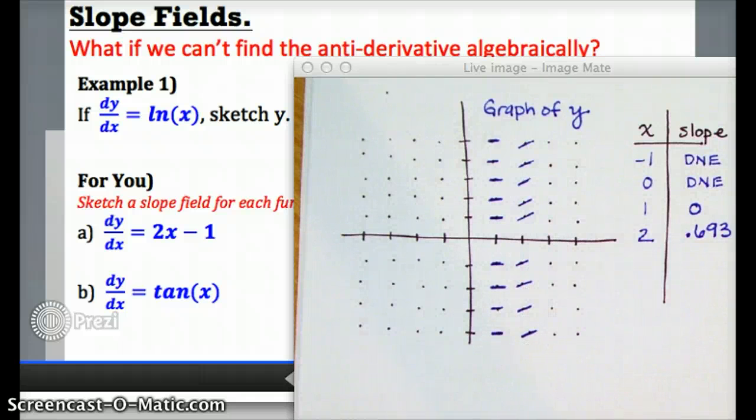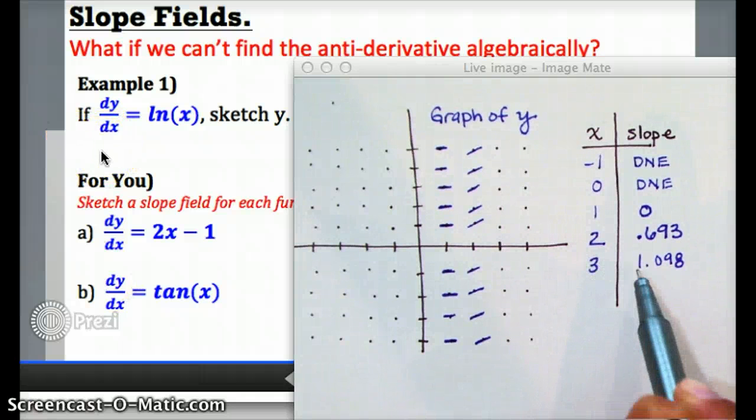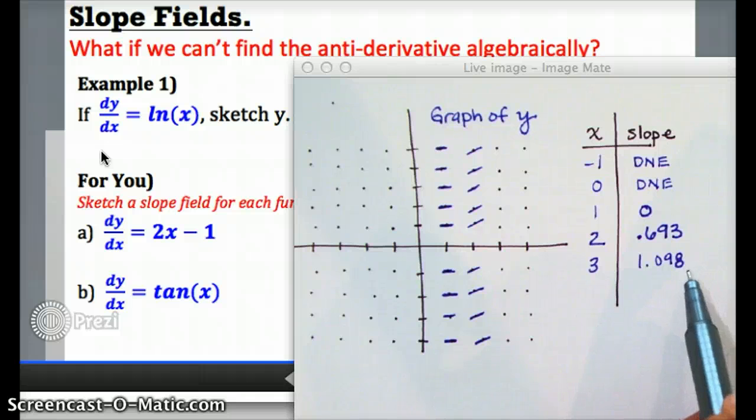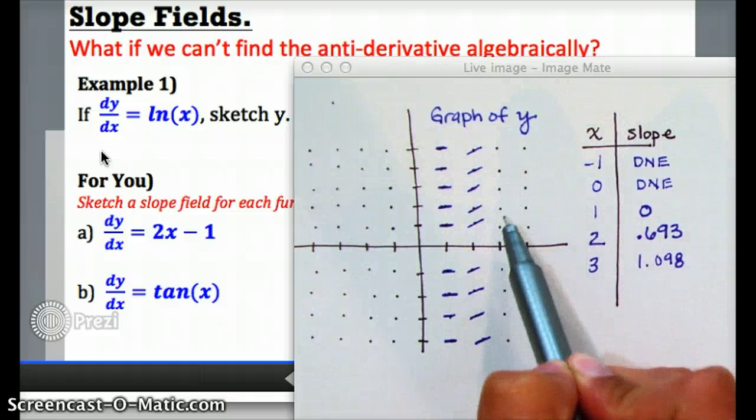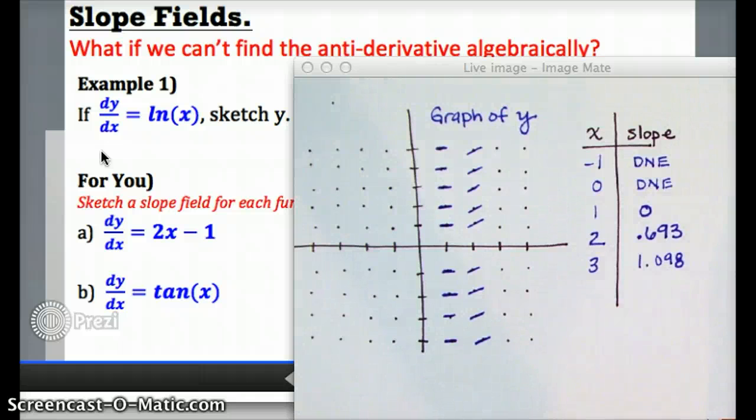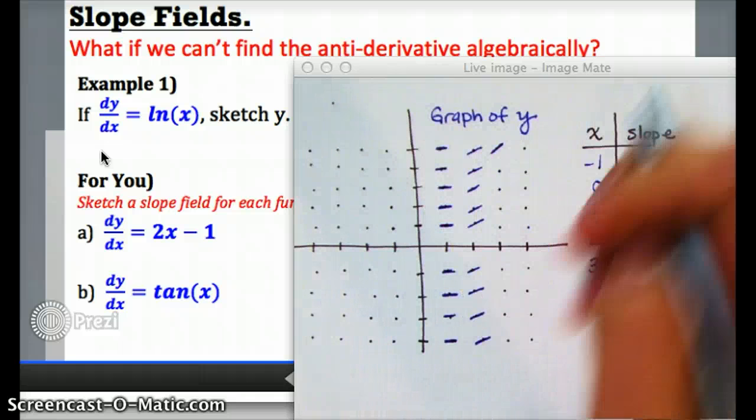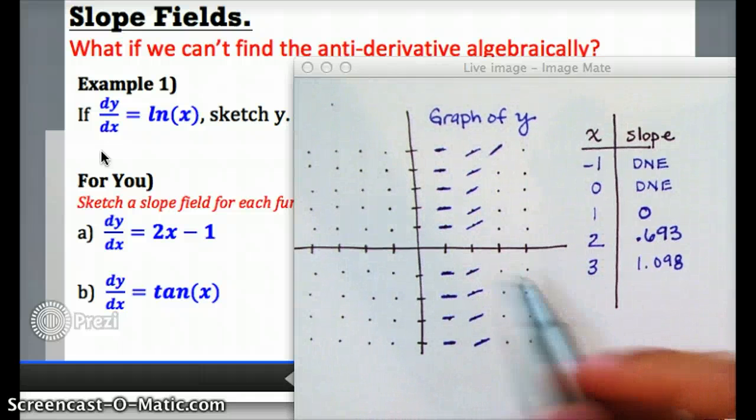Let's check 3. So by evaluating the derivative function at 3, I realize the slope is going to be around 1, which means all of these points that have x coordinates 3 are going to have little slope lines approximately going at a slope of 1, which is a little steeper than the last one, but not terribly steep yet.